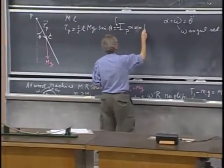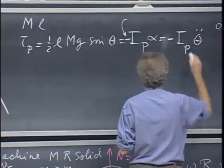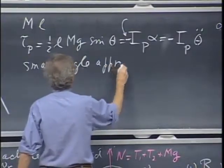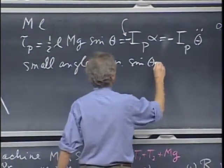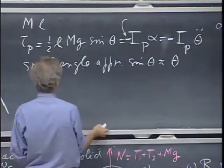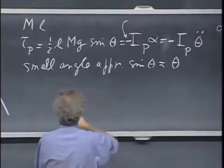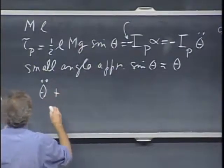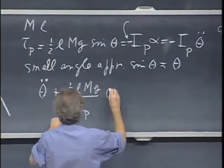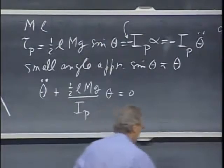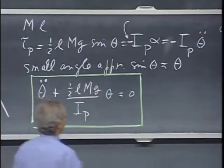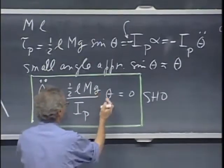So I can write minus I_P times theta double dot. Now, if we take the small-angle approximation, the sine of theta is approximately theta if theta is in radians. So I can replace sine of theta by theta, and bringing terms to the other side I get: theta double dot plus one-half L·m·g divided by the moment of inertia about point P, times theta, equals zero.